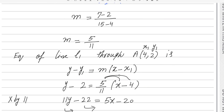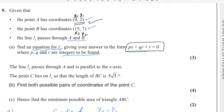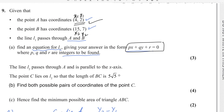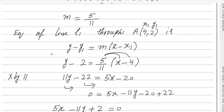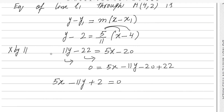This is exactly as required — everything is on the left-hand side with no fractions. Therefore P is the coefficient of x, which is 5; Q is the coefficient of y, which is minus 11; and R is the constant, which is 2.